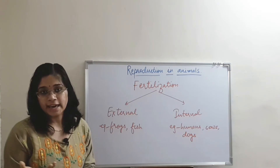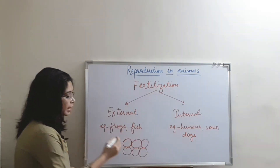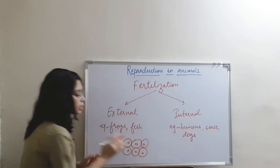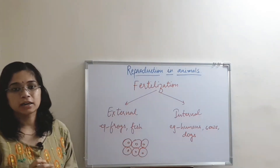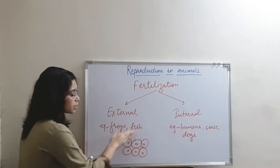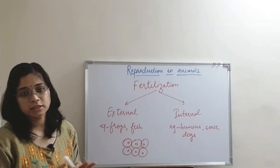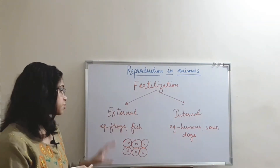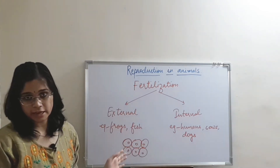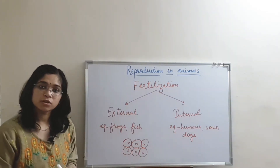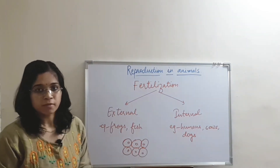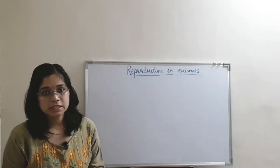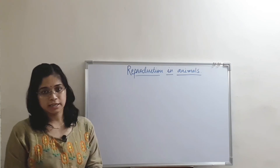In external fertilization, after the eggs are laid, the male partner will come around and swim over the eggs, then produce sperm. The sperms will fertilize these eggs, and after the fertilization process, a new organism is formed. So this is external and internal fertilization — all the matter we discussed for the part of natural fertilization.